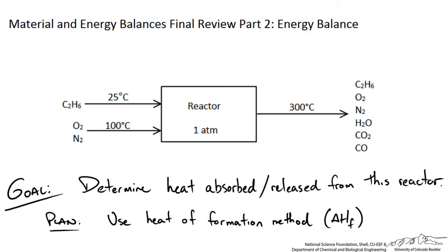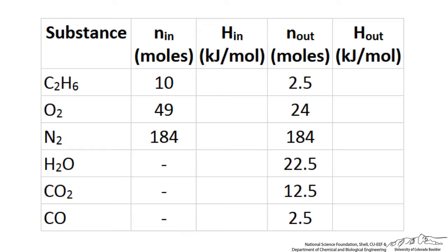Since we have multiple species at different conditions, the best way to start any energy balance is to set up a table. In this table we will have a column representing our species, with each row being a different species in our material balance. We keep track of the flow rate and specific enthalpy for each species in each stream. For a single inlet and single outlet we get four columns, representing moles in and moles out. These molar values were already calculated in part one.